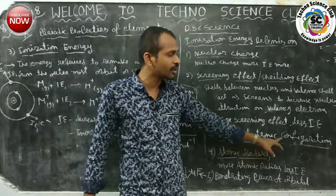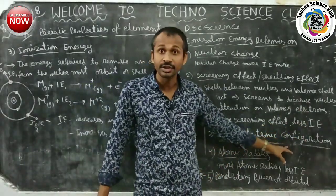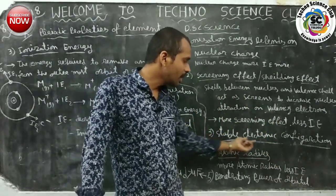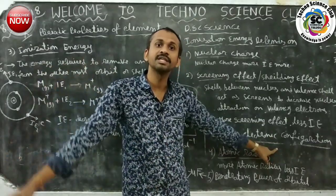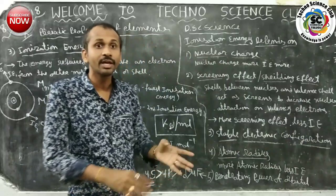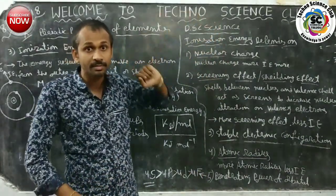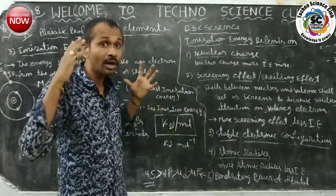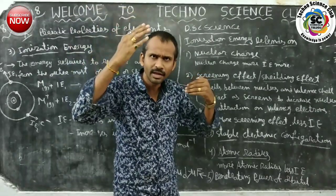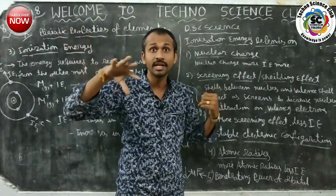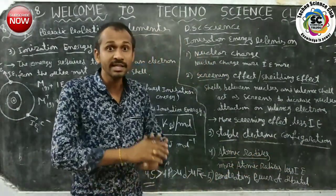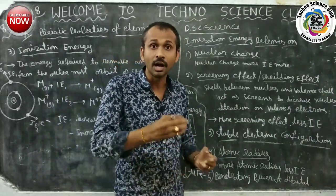The fourth factor is atomic radius. When atomic radius increases, less ionization energy is required. As atomic radius increases, the distance between the nucleus and the outermost electrons increases, the attraction between them is very less, so we can remove that electron easily. Therefore, less ionization energy is required when atomic radius is large.